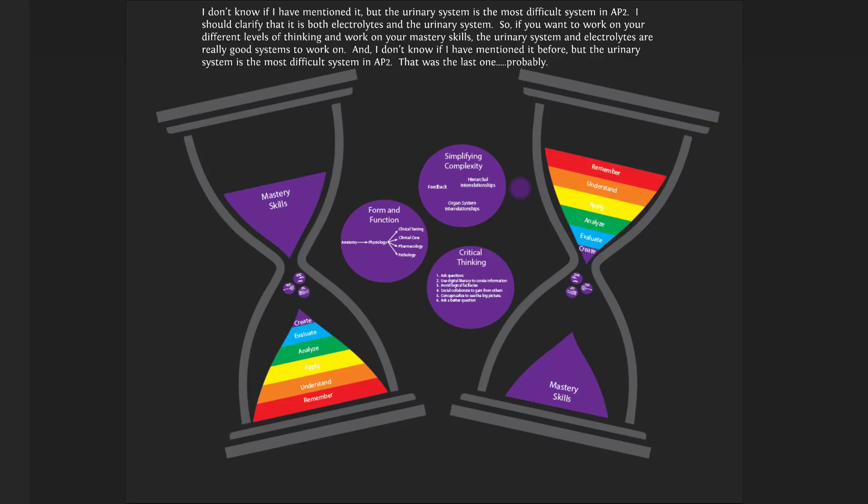The urinary system is the most difficult system in AMP-2. To clarify, it's both electrolytes and the urinary system together. If you want to work on your different levels of thinking and mastery skills, the urinary system and electrolytes are really good systems to work on.